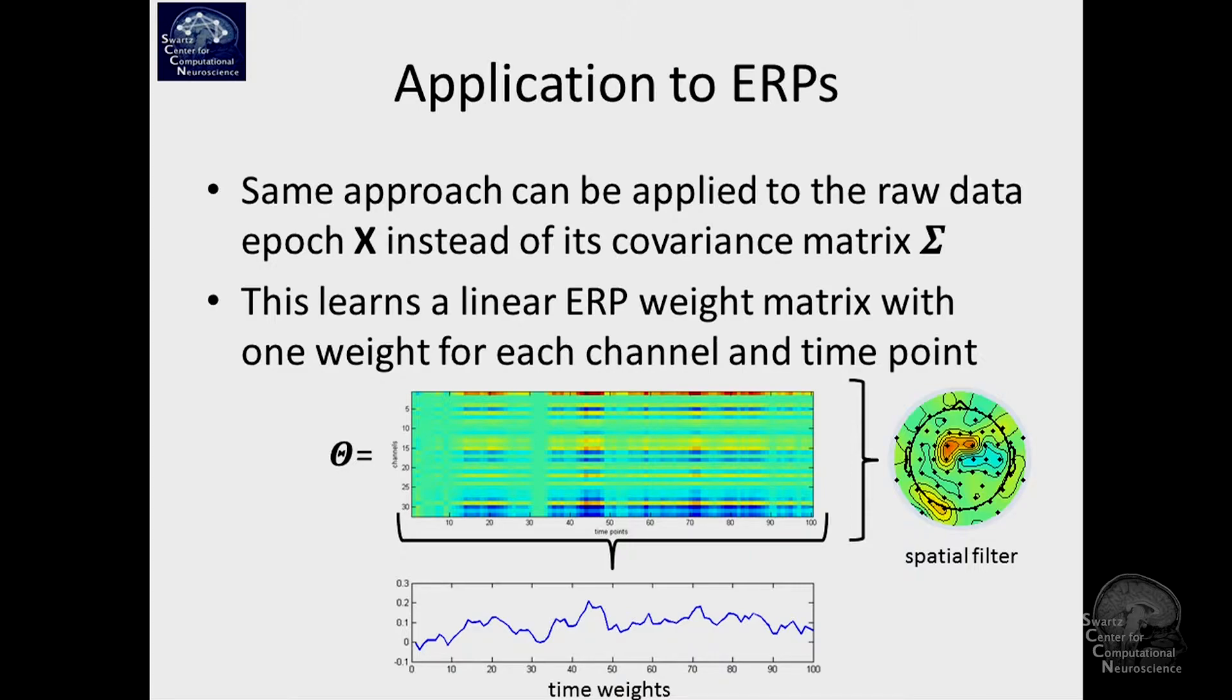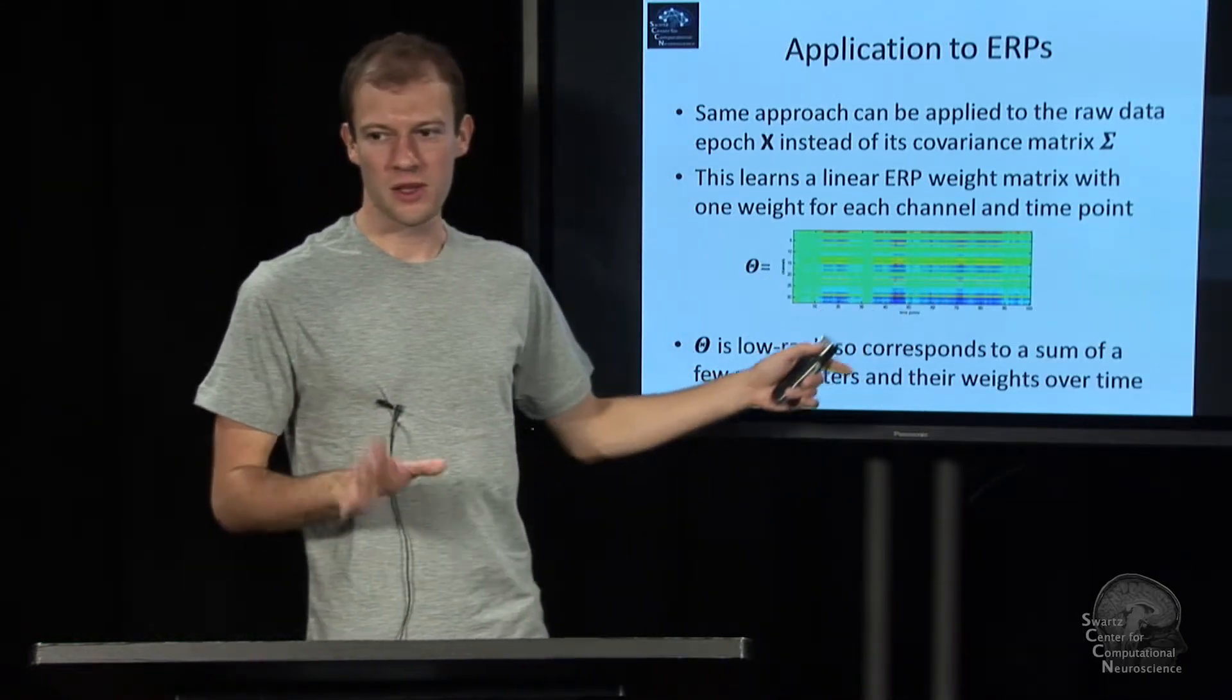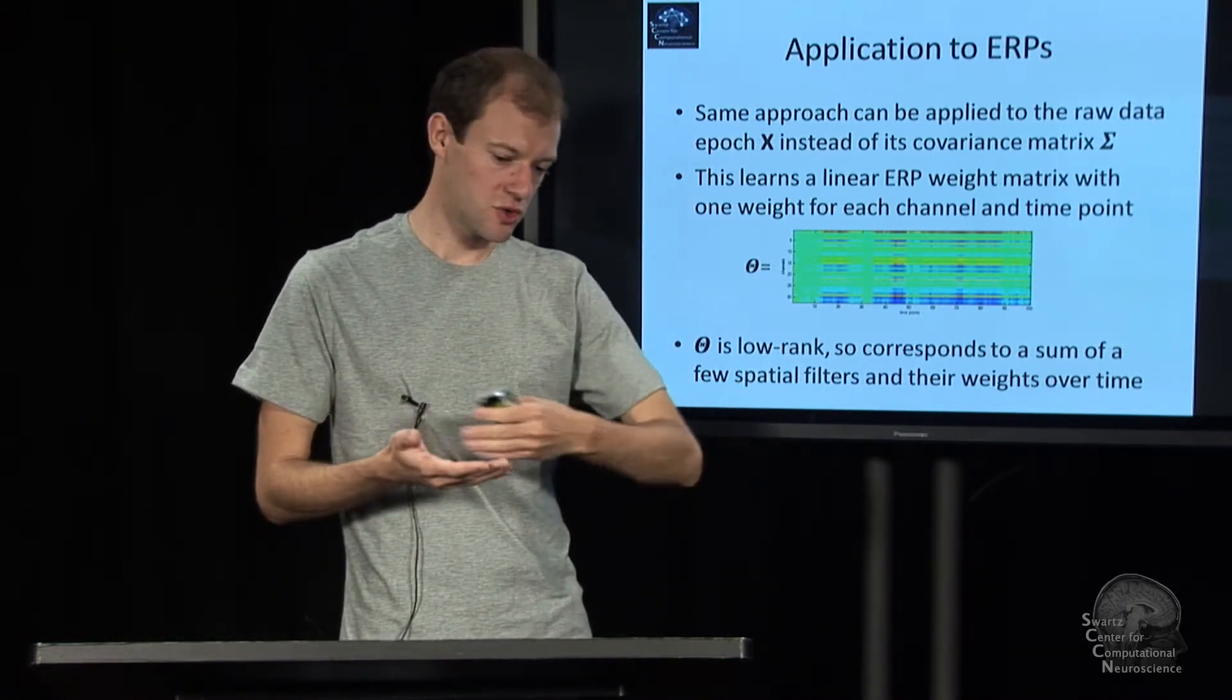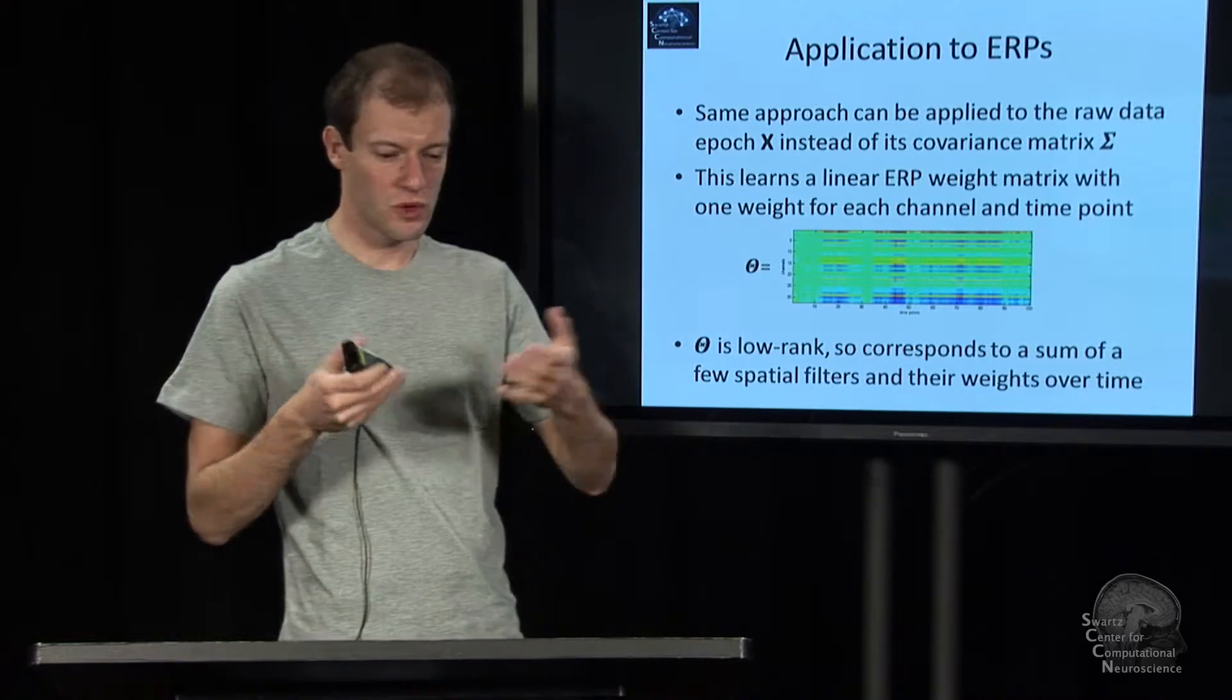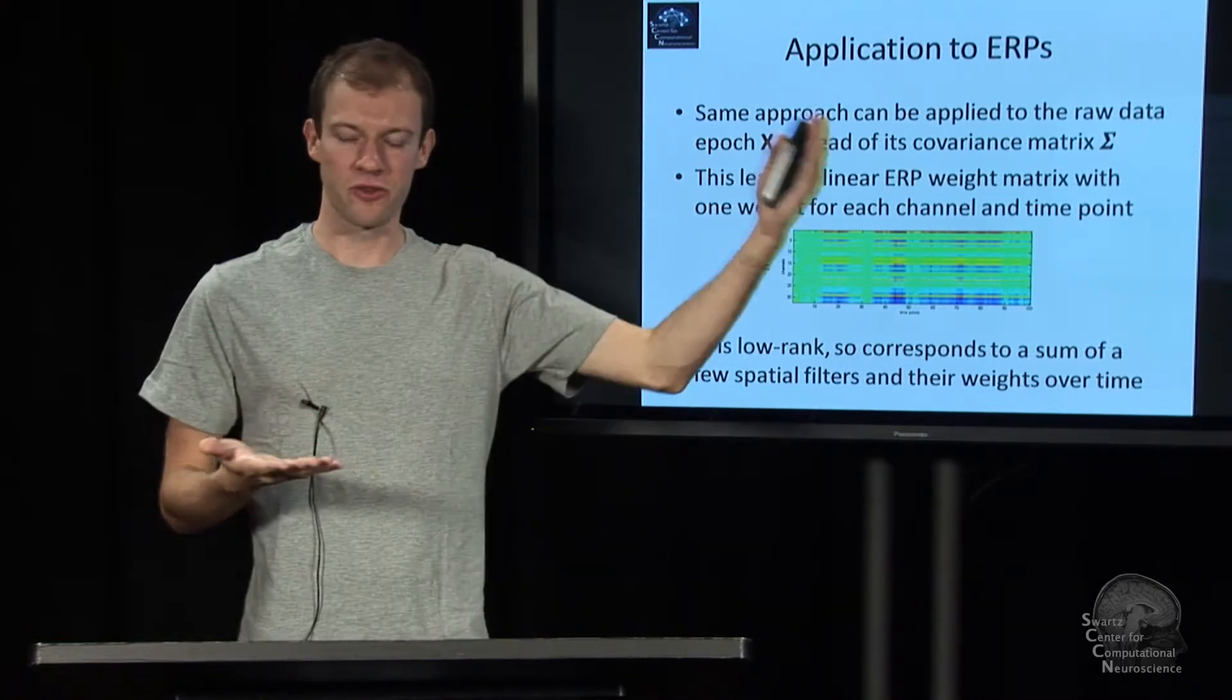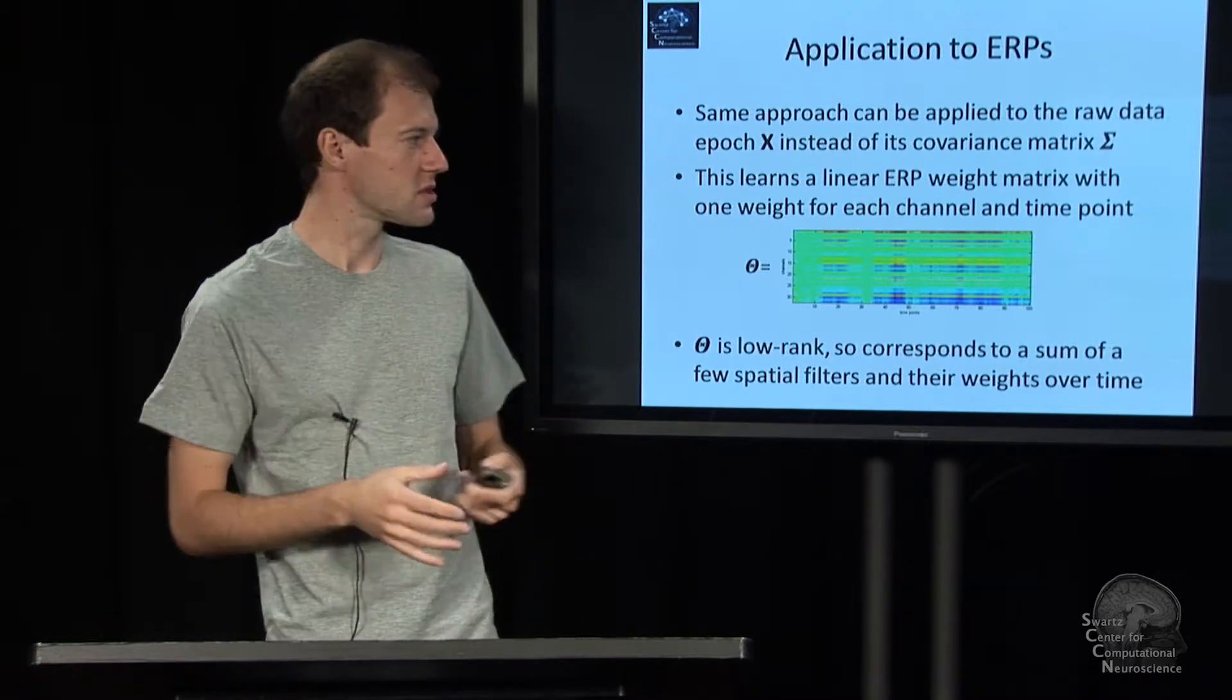You could use this exactly as it comes and apply it to the Flanker task data that we described earlier. And because it's not just rank one, it's low rank, maybe rank five or so, you are learning, in effect, a small number of sources and their associated time courses in this epoch, or the associated time weights for that, that are maximally predictive of your label, your class label or your continuous output. So you learn how many sources are relevant.